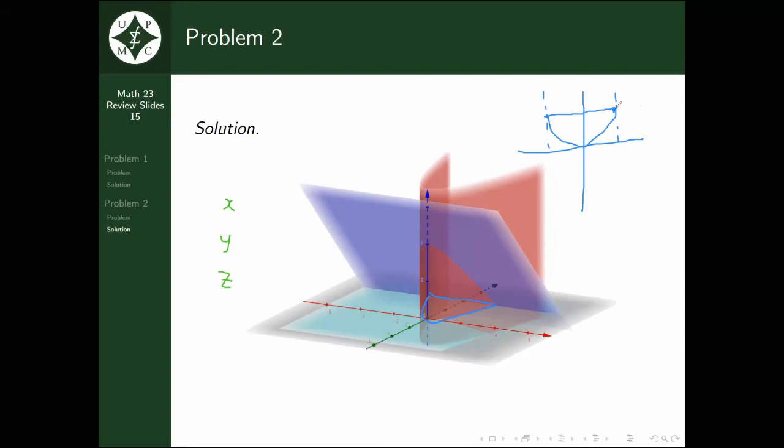We need to find the intersection points in order to determine what are the bounds of this area. This point of intersection is between y = x², our cylinder, and then this line here. But this line is just a projection of the plane y + z = 4 onto the xy plane. Remember, on this axis, z = 0.